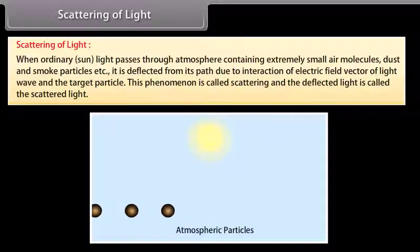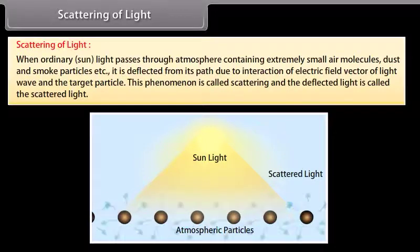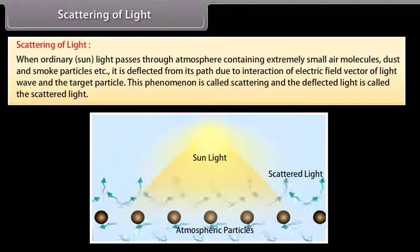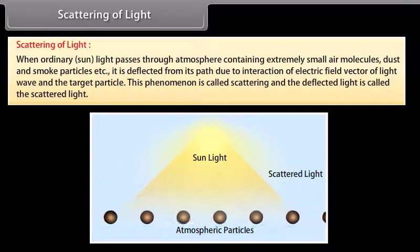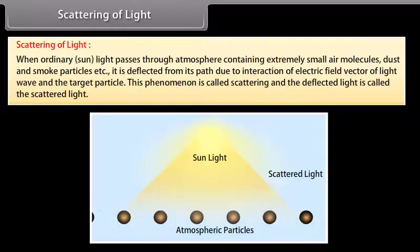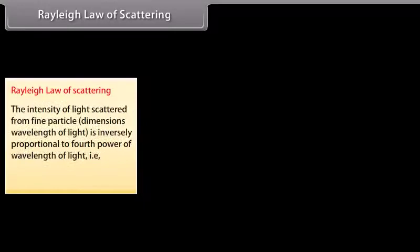Scattering of light. When ordinary sunlight passes through the atmosphere containing extremely small air molecules, dust, and smoke particles, it is deflected from its path due to interaction of the electric field vector of the light wave and the target particle. This phenomenon is called scattering, and the deflected light is called scattered light. The intensity of scattered light from fine particles is inversely proportional to the fourth power of wavelength: I ∝ 1/λ⁴.